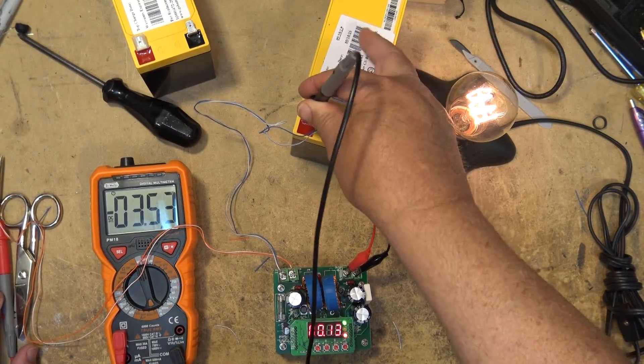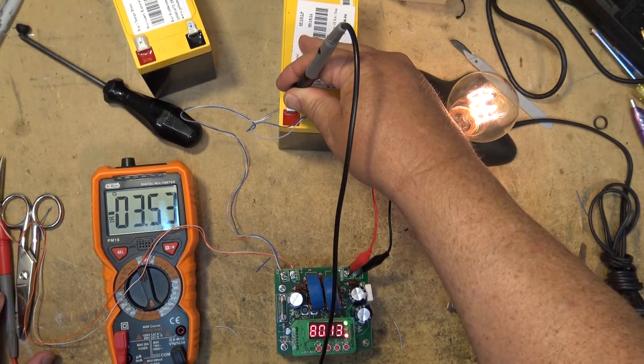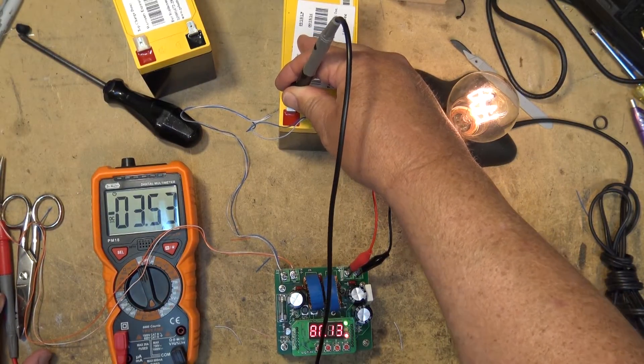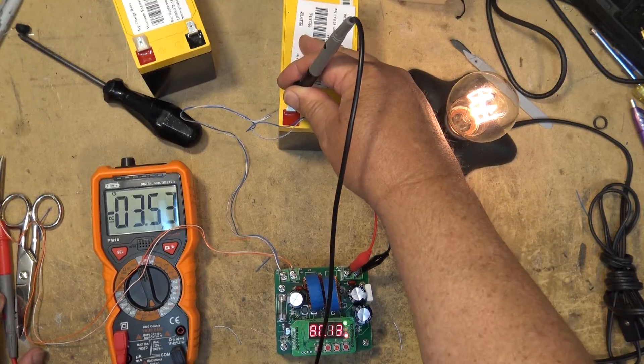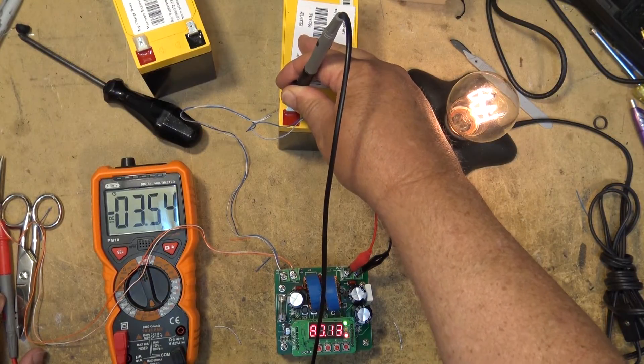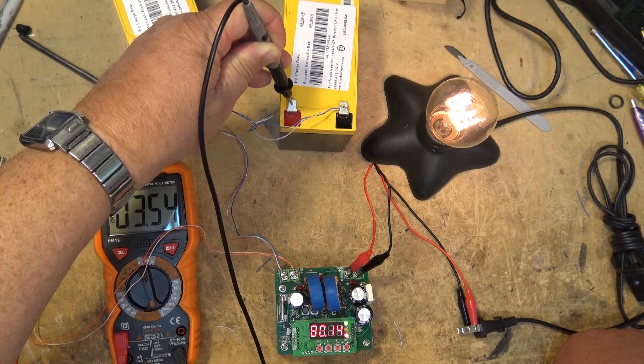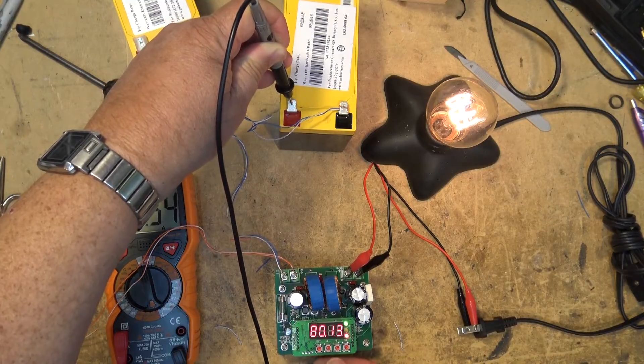At three and a half amps, this should run for probably an hour and a half to two hours before it goes down. With an eight amp hour battery, you should be able to draw eight amps for one hour. Drawing three and a half, this should give me a couple of hours.